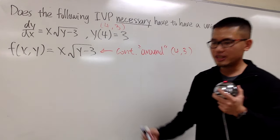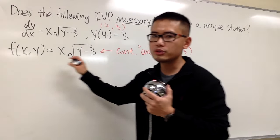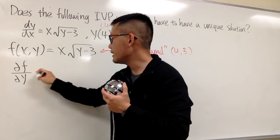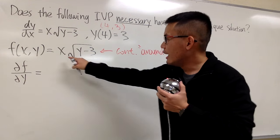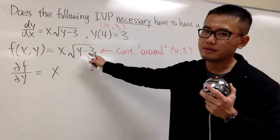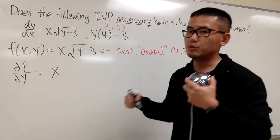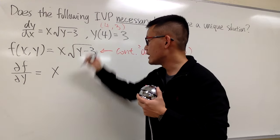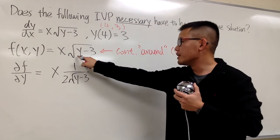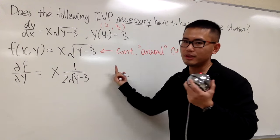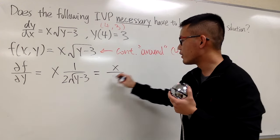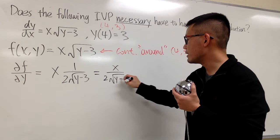My second check is to take the partial of f with respect to y. x will be considered a constant, so we'll have that. We'll have to take the derivative of the square root of y minus 3 with respect to y. The answer for that will be 1 over 2 square root of y minus 3, and the derivative of the inside with respect to y is just 1. So this simplifies to x over 2 square root of y minus 3.